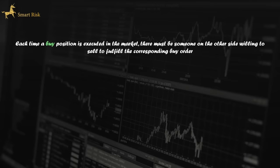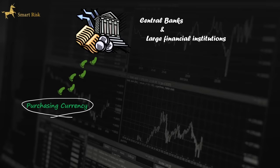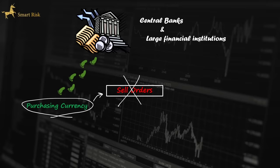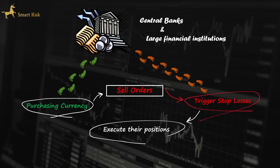Each time a buy position is executed in the market, there must be someone on the other side willing to sell to fulfill the corresponding buy order, and vice versa. Let's imagine that large financial institutions are interested in purchasing a currency pair with a large number of orders. To do this, they require a significant number of sellers and corresponding sell orders in the market — because without available sellers, no transactions can take place. Therefore, smart money needs to trigger the stop-loss and buy-stop orders already present in the market to execute their buy positions.